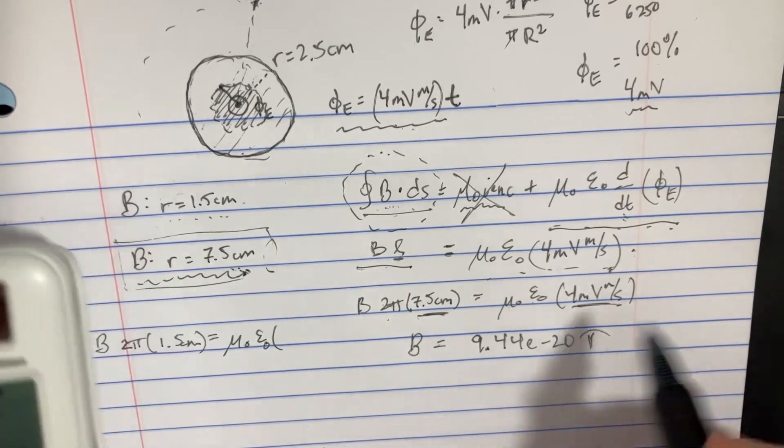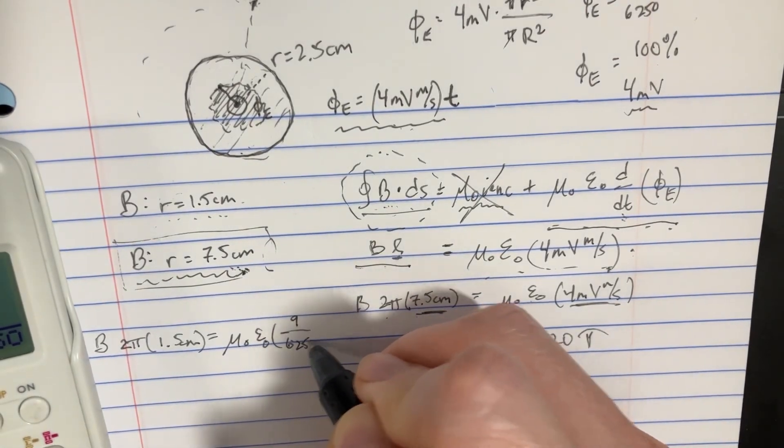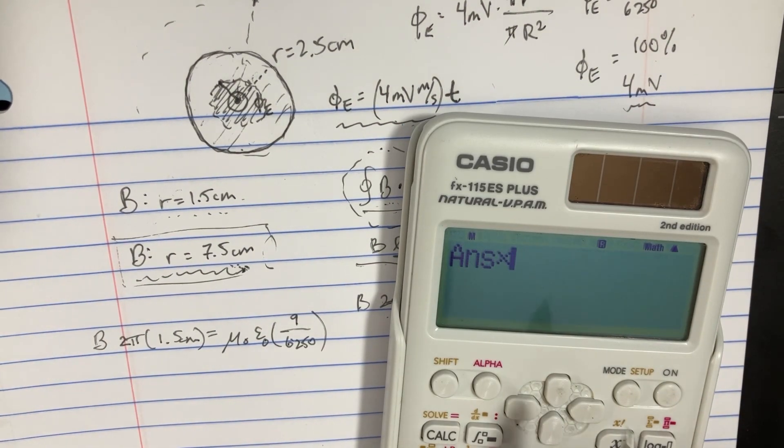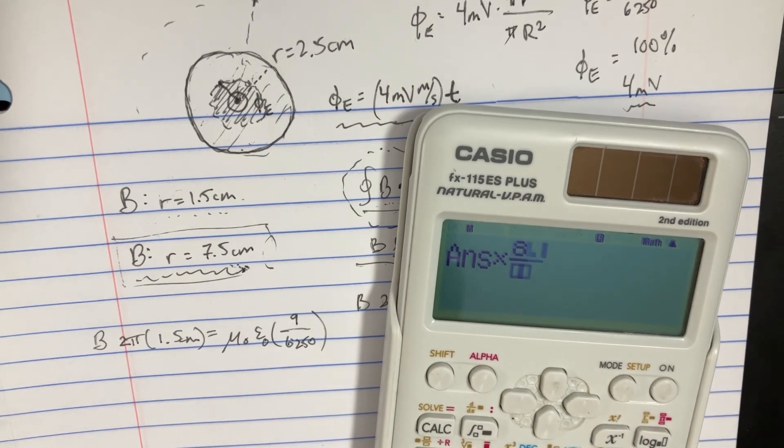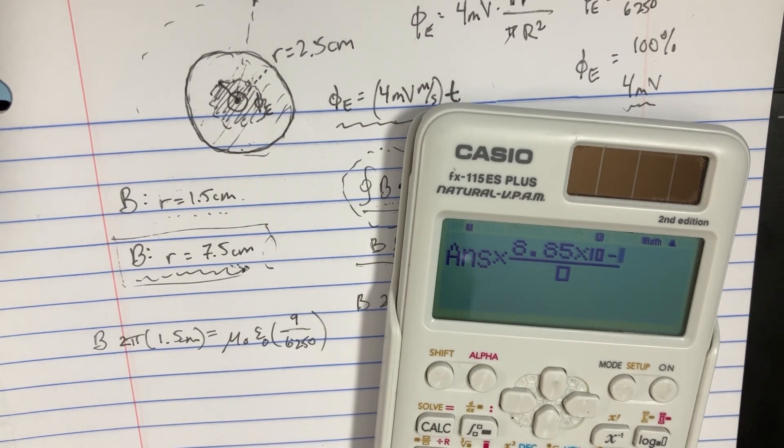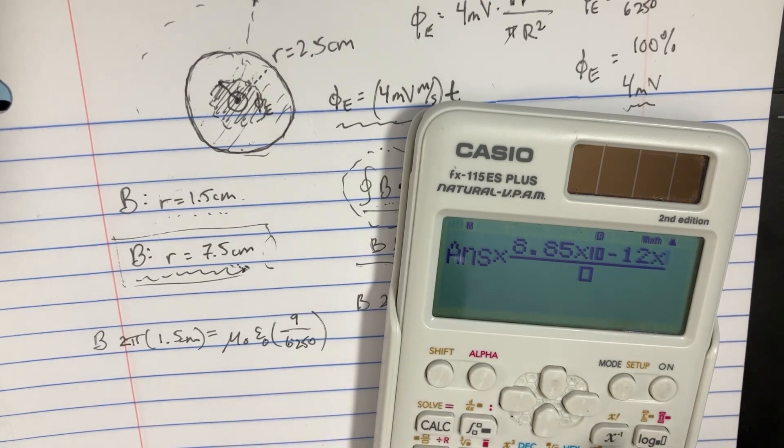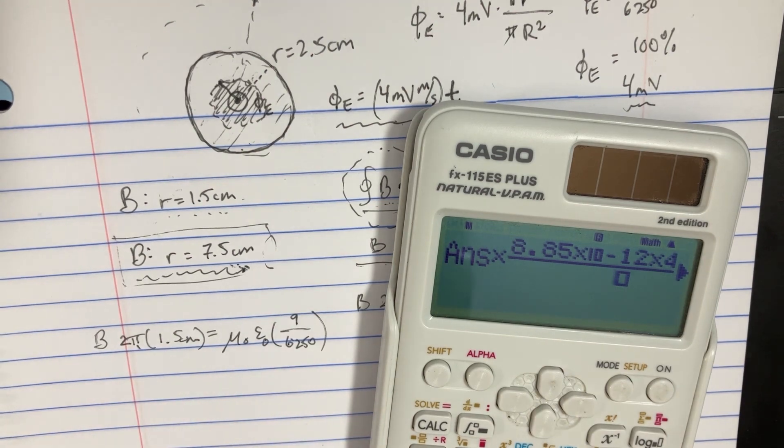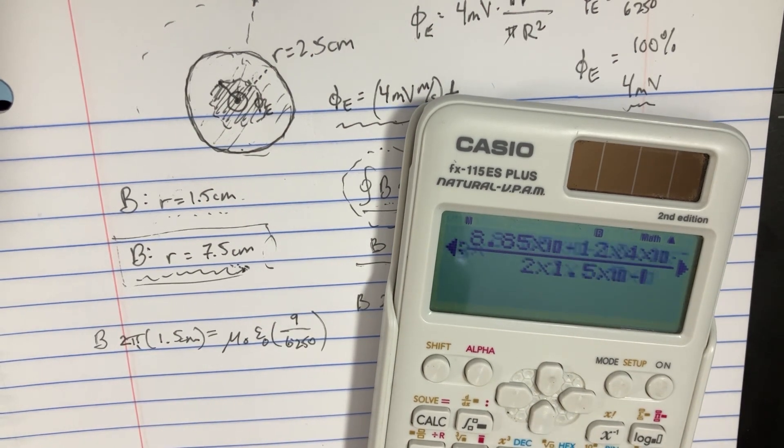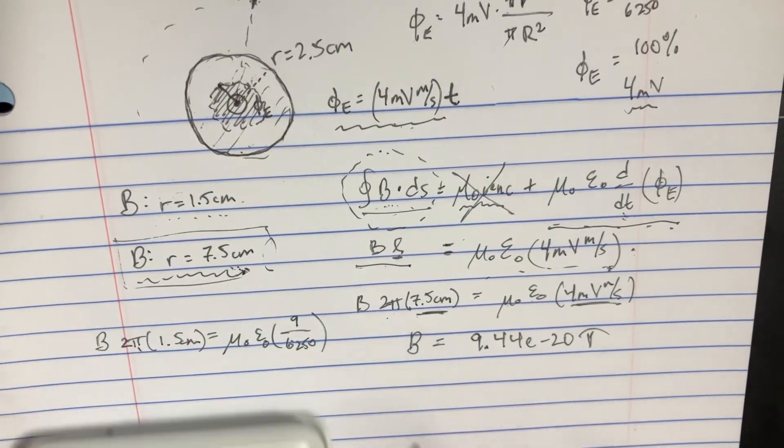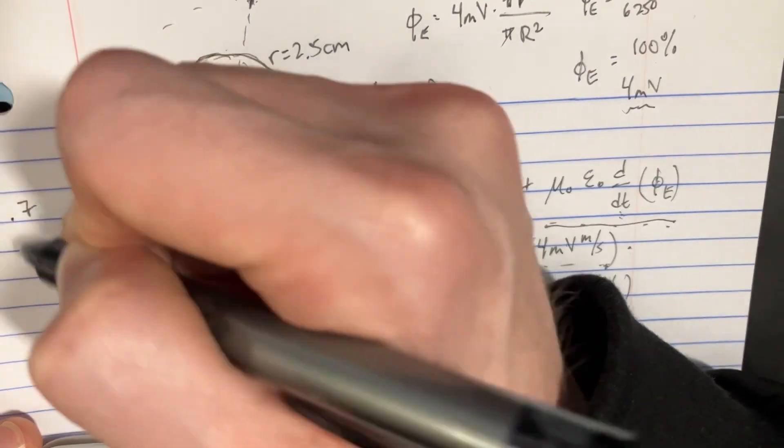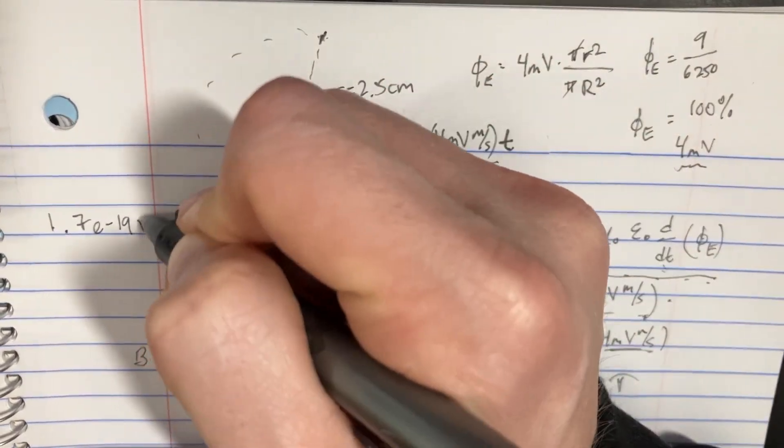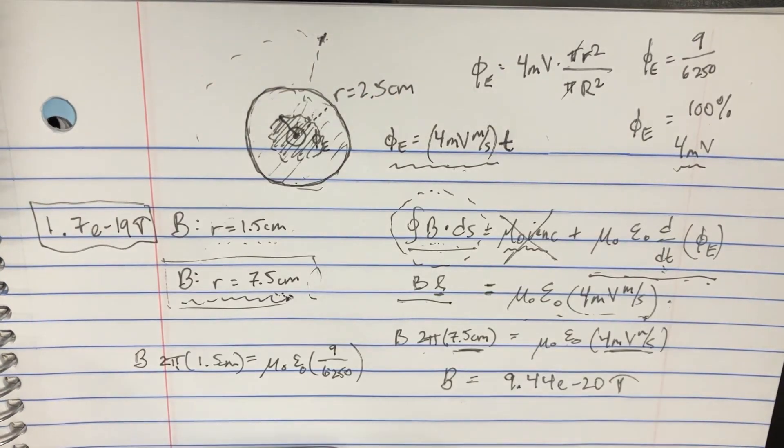Okay, so that's what we're going to use right over here, 9 over 6.25. And so now we should be able to solve this, because we'll multiply that times the mu naught, epsilon naught times 10 to the negative 12, times the mu naught, 4 times 10 to the negative 7. We're going to get rid of the pi on that side, but we're also going to divide this by 2 times 1.5 times 10 to the negative 2. So on this side, on the smaller one, we would get 1.7 times 10 to the negative 19 tesla. So there we go.